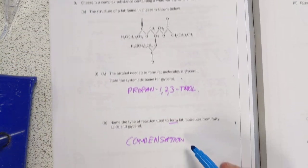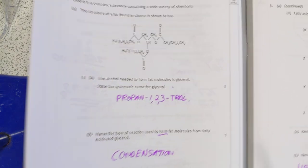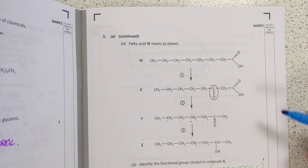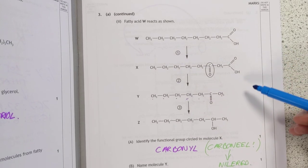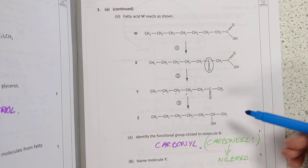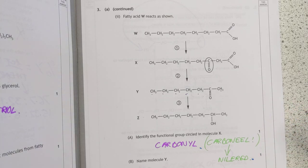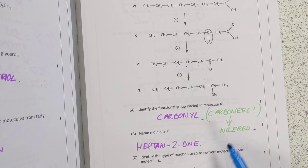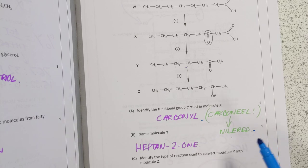Propane-1,2,3-triol, glycerol. Condensation reactions, these are too easy, I'm not spending any time on these. This one here, functional group, just name it. It's a carbonyl group. Or if you're NowRead, carbonyl for some reason. Must be a Canadian thing. If you haven't watched NowRead, go and have a look at their stuff. It's good stuff on YouTube. Name molecule Y. It's heptan-2-one.